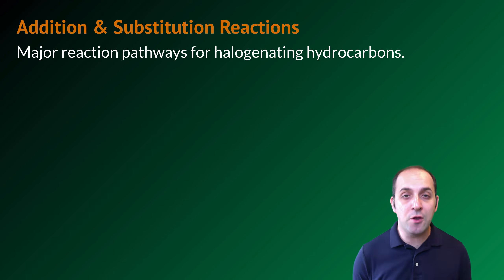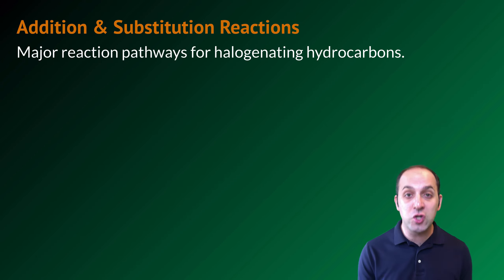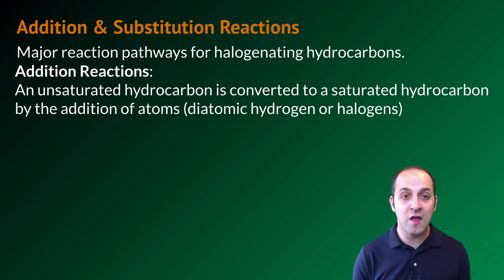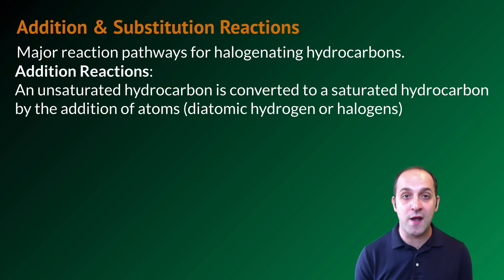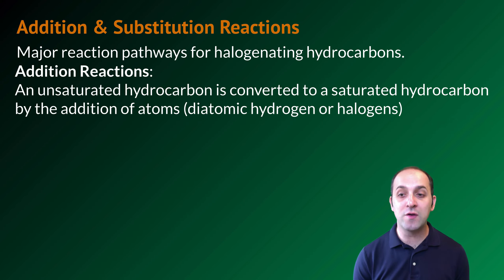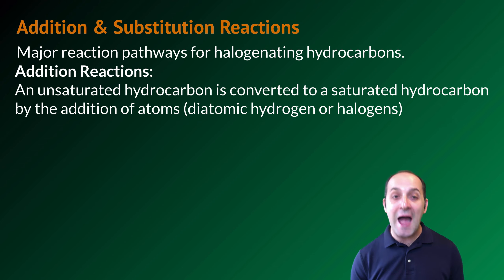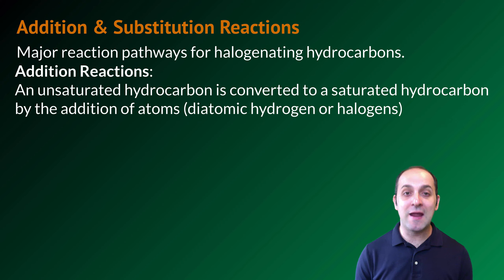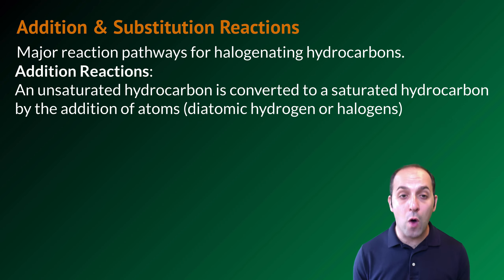There are a couple of different ways to put halides onto hydrocarbons. We're going to focus on two chemical reactions that do that: addition reactions and substitution reactions. In an addition reaction, we start with an unsaturated hydrocarbon and we convert it to a saturated hydrocarbon by adding atoms to it — either diatomic hydrogen or, in the case of halides, diatomic halogen molecules.